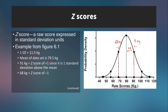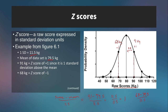To calculate a z-score, we take the score and subtract the mean, then divide by the standard deviation. For 91: 91 minus 79.5 over 11.5 equals 1. And for 68: 68 minus 79.5 over 11.5 equals negative 11.5 over 11.5, which equals negative 1.